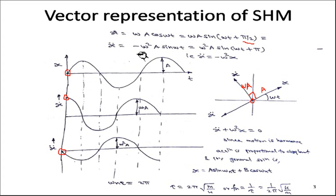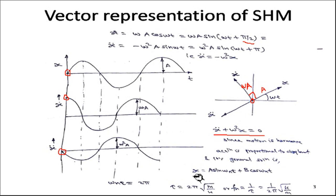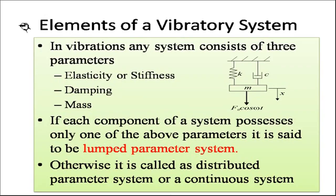The equation of simple harmonic motion is: ẍ + ω²x = 0. The motion is harmonic, and acceleration is proportional to displacement from the mean position. The general solution is x = A sin(ωt) + B cos(ωt), where the natural period τ = 2π√(m/k) and the natural frequency fₙ = (1/2π)√(k/m).